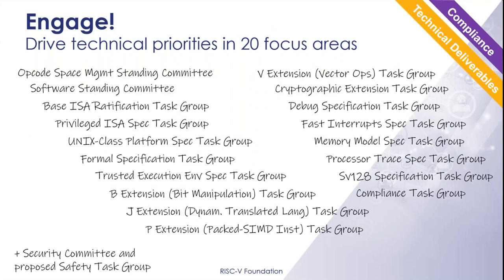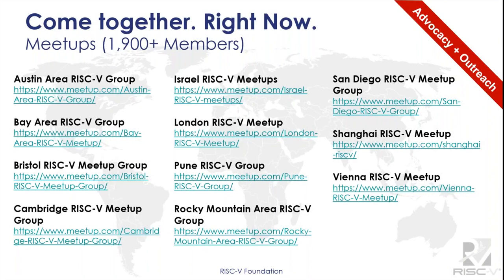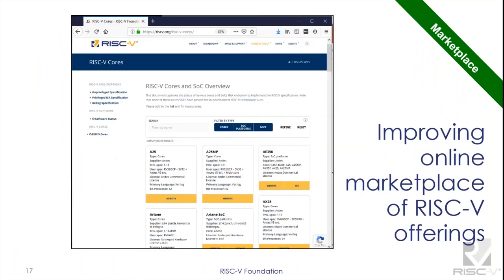The next thing is meetups. There are now three meetups in the UK that I know of: London, Bristol, and Cambridge. So there's a growing interest in the UK. One interesting feature of the RISC-V ecosystem model, if you want to call it that, is the development of the marketplace. You can actually look at what cores have been produced and what the licensing terms are — that's quite an interesting innovation.